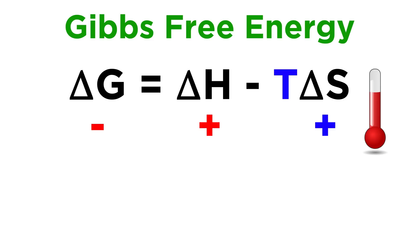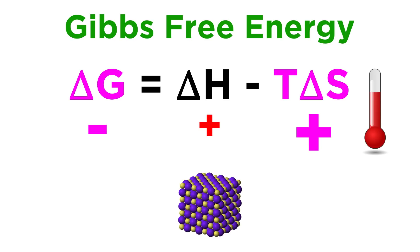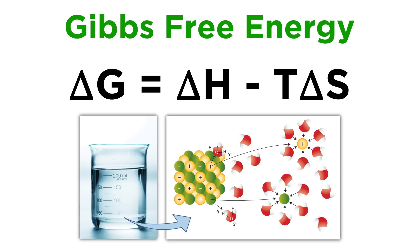In fact, the higher the temperature, the more relevant this second term becomes, because as TΔS gets bigger, ΔG becomes more negative, and this is why most soluble ionic solids have their solubilities increase at higher temperatures. But the key thing to understand about dissolution is that just as with any other chemical process, there is a change in enthalpy and a change in entropy, and both must be considered when examining the spontaneity of the process.